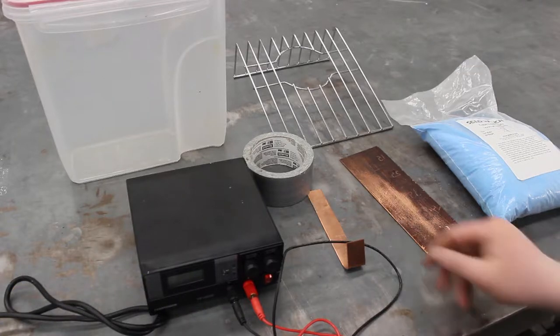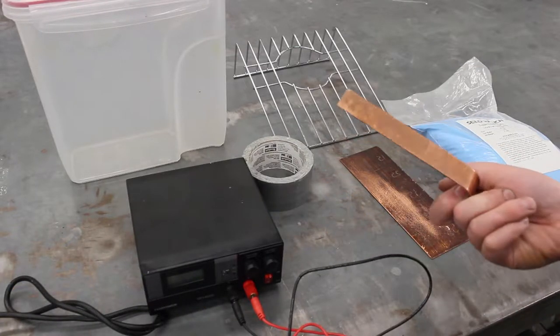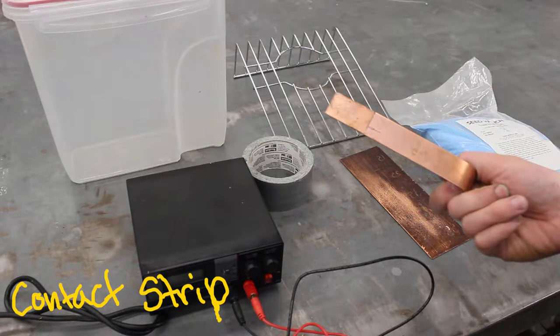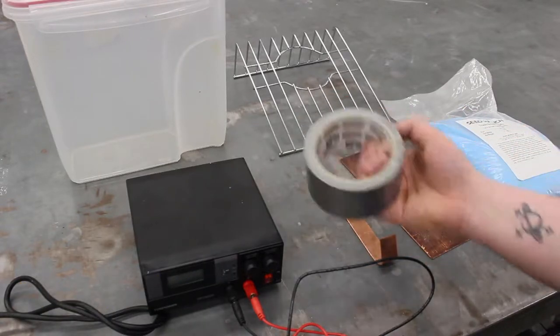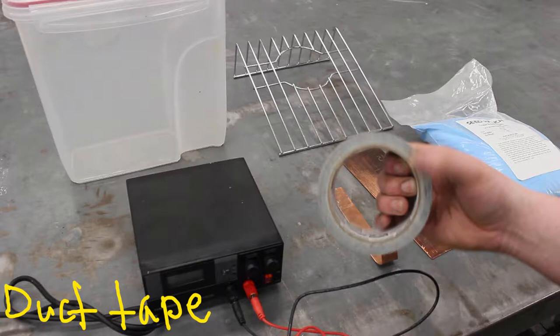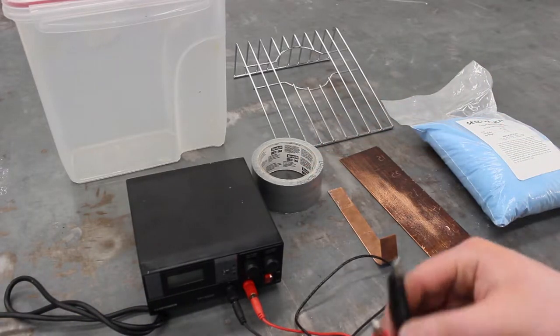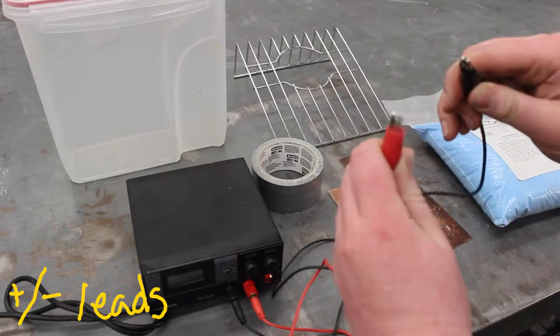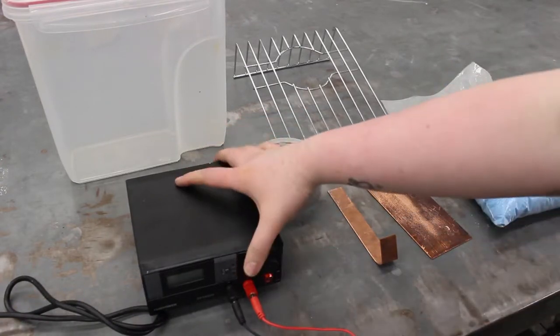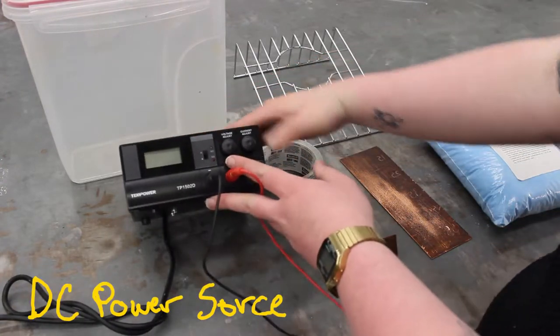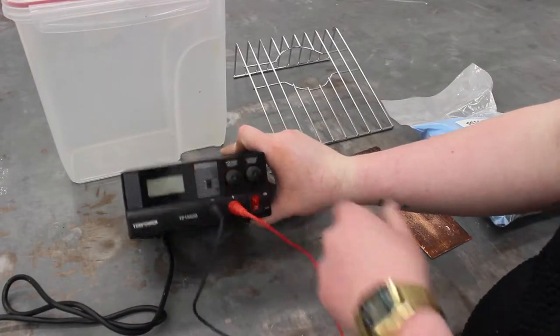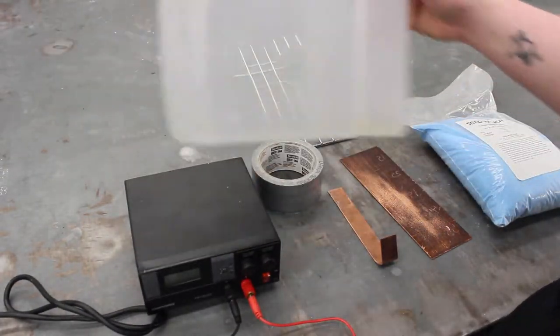You'll need a copper strip, about half an inch to three quarters of an inch wide, with enough length to go into your tank and rest on the outside edge. You need some duct tape or contact paper, whatever you prefer. Positive and negative leads with alligator clips, and a direct current power source with adjustable current and voltage.